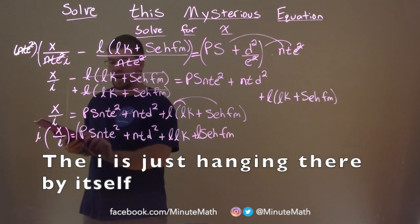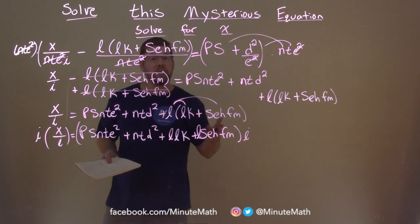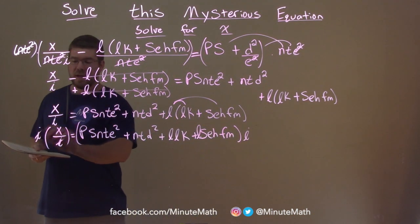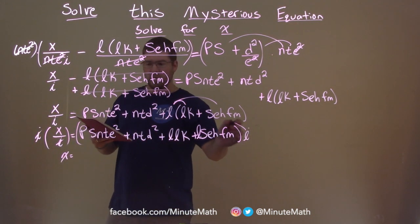And remember, we have to multiply it to the whole right-hand side. We have to distribute there. i's cancel here, and x is by itself. And we distribute the i over here.